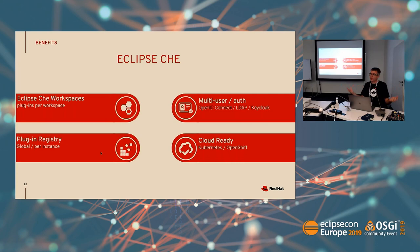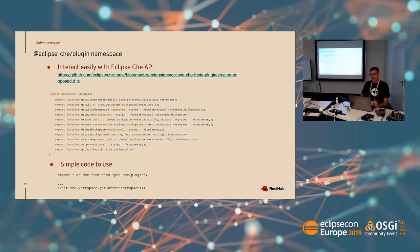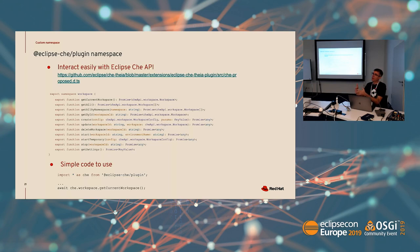It's very easy to connect to different registries, and you have authentication already built in when you are using Eclipse Che. It can be provisioned on a Kubernetes cluster or OpenShift cluster. When you are using Eclipse Che, you have access to the VS Code namespace — you can do import star as VS Code from VS Code. But we are also providing a new namespace called the Eclipse Che plugin namespace, and with this namespace you can have access to workspace metadata, all the containers of your workspace, and the current user connected to Eclipse Che. We provide other methods you can use inside your plugins to use Che-specific functionality.